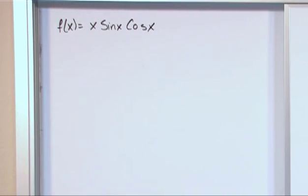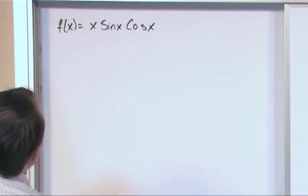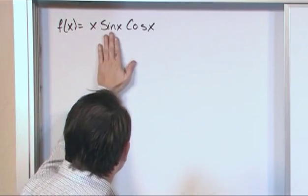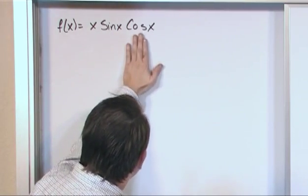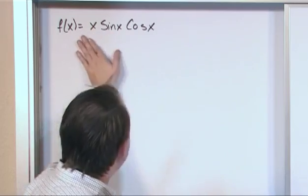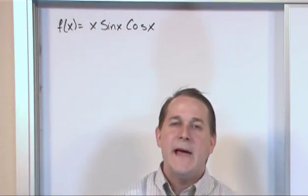Now at first glance, if you saw this on a test and you never really tried a problem like this, you might say, whoa, challenge problem, because you know how to take the derivative of sine, you know how to take the derivative of cosine, you know how to take the derivative of this, but they're all multiplied together. And furthermore, when we talk about the product rule, function a times function b, you know how to do that, but here there's three functions.